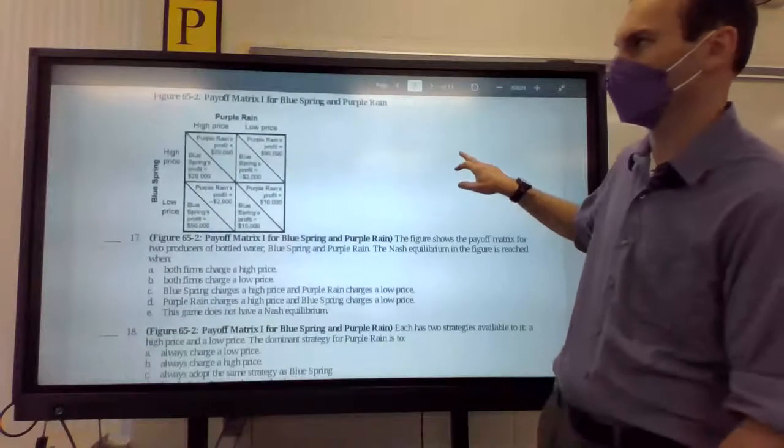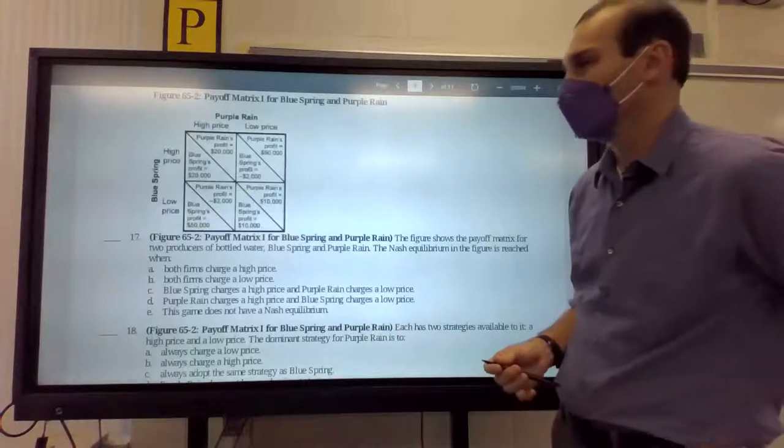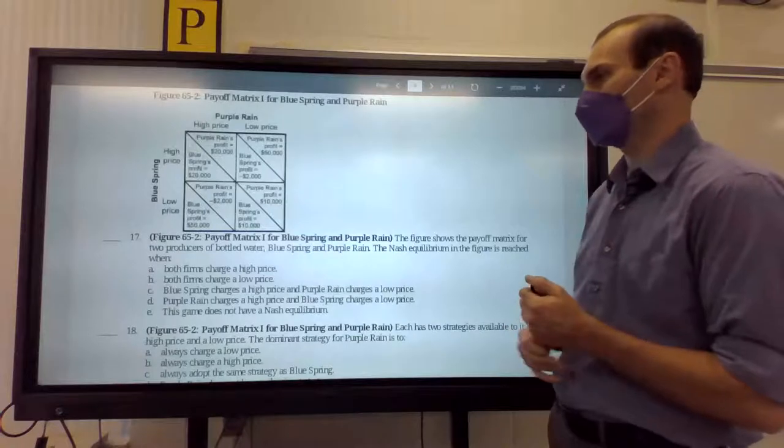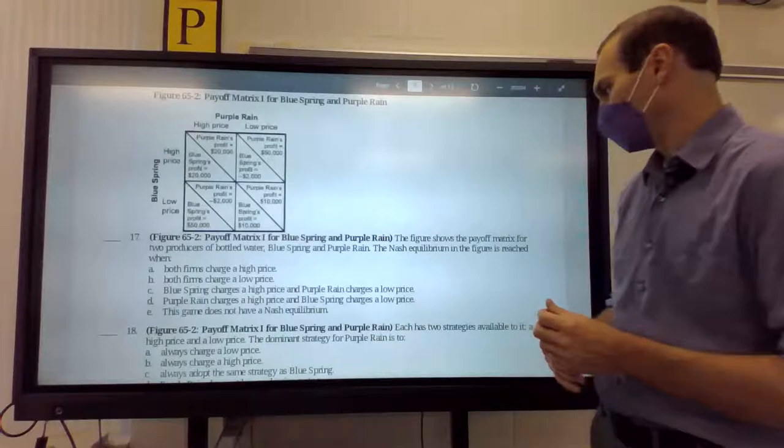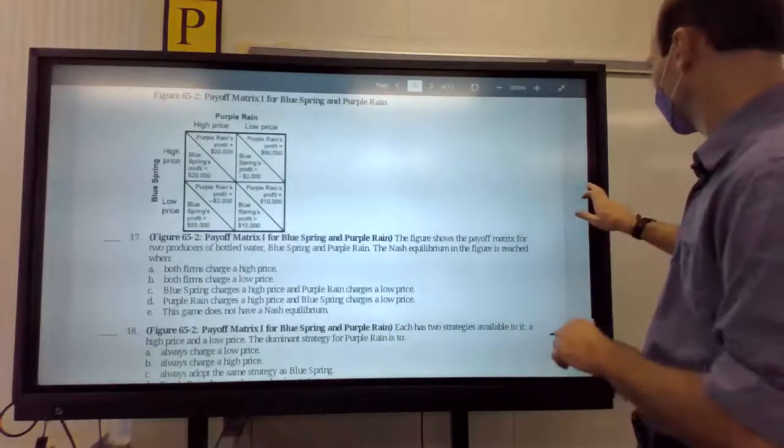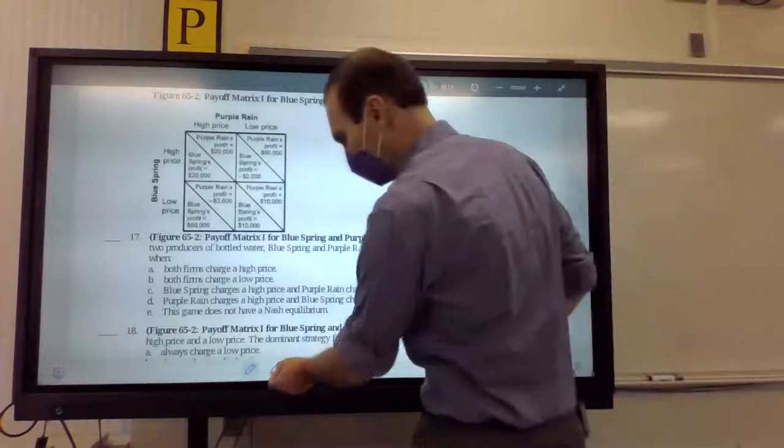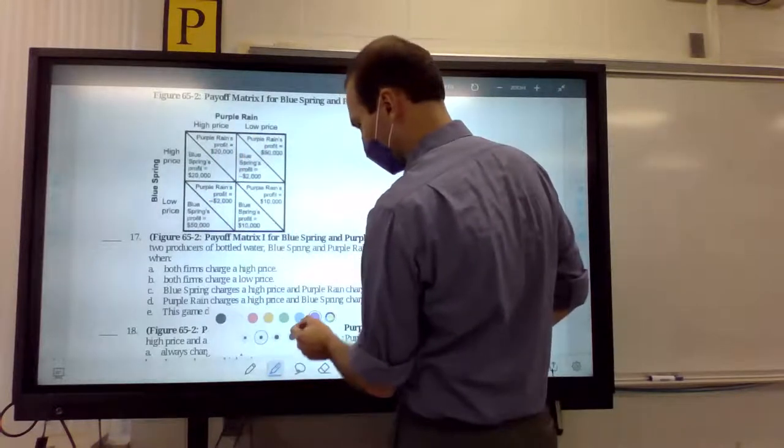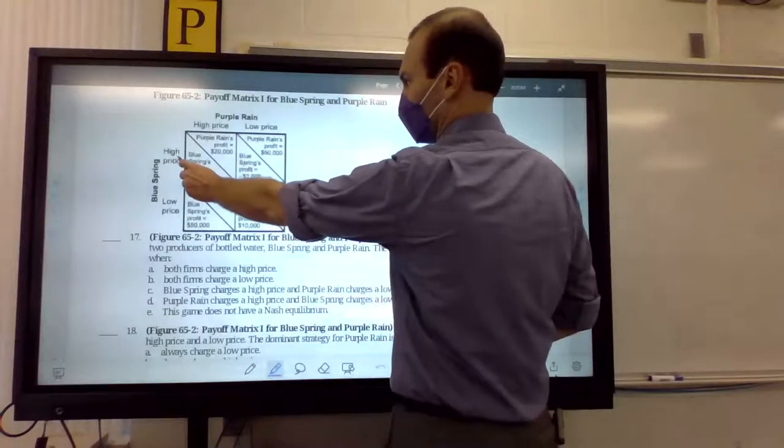Purple rain. Man, they're making all the good references this time around. So, let's find the Nash equilibrium. Just kind of, again, we step by step. So, what should purple rain do if blue spring charges a high price? Make $20,000 or $50,000?